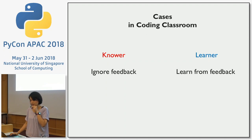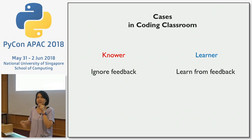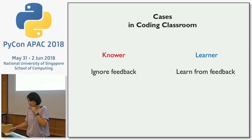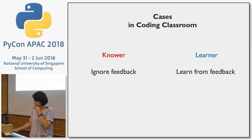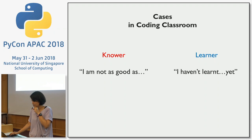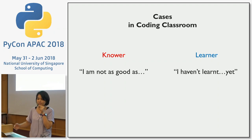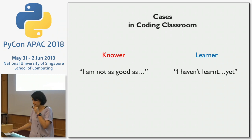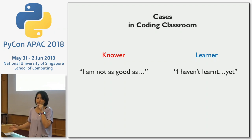Another case: the knower student would ignore feedback. They've already learned a few things, they know it, and they keep using the same methods. A learner, by contrast, is more open to learning from feedback. Another language of a knower is: 'I'm not as good as my classmate.' Whereas a learner would say, 'I haven't learned this yet — my classmate has learned it, but I haven't learned this yet.'